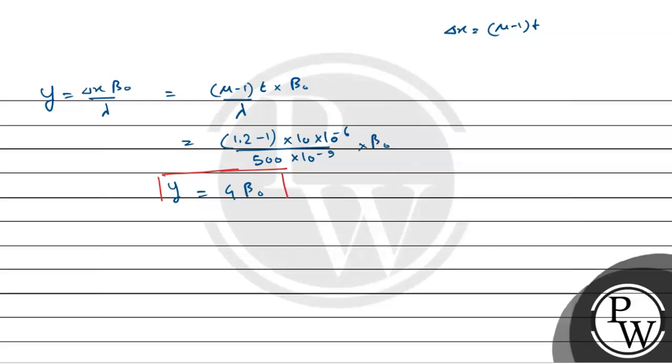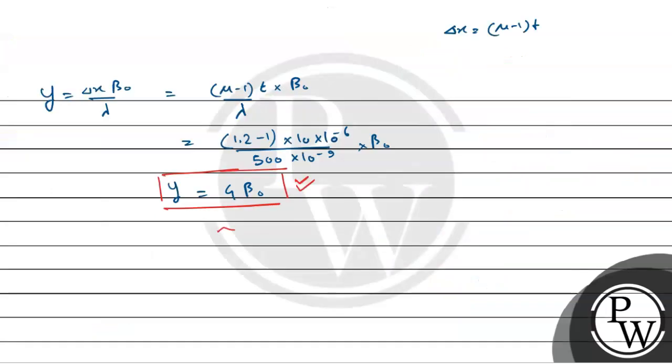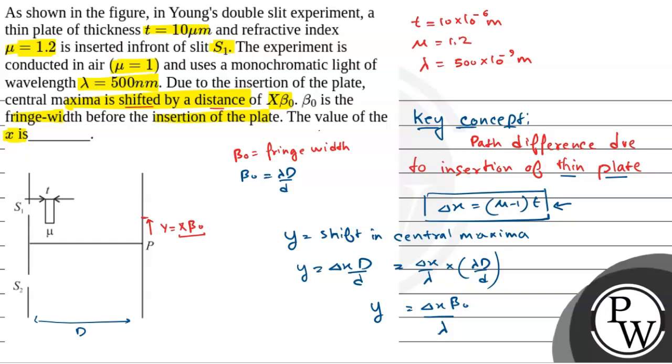Okay, so the shift in the central maxima is 4 beta naught, right? So comparing this with x beta naught, comparing correctly, so x is what? 4. Okay, so this is our final answer. So the value of x is what? x is 4. Okay, so this is our final answer. Hope you understand it, best of all.